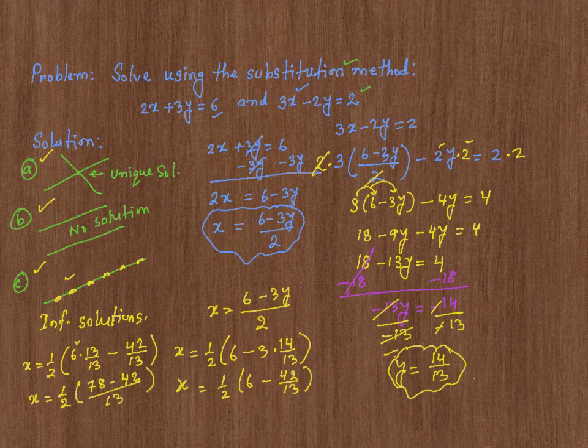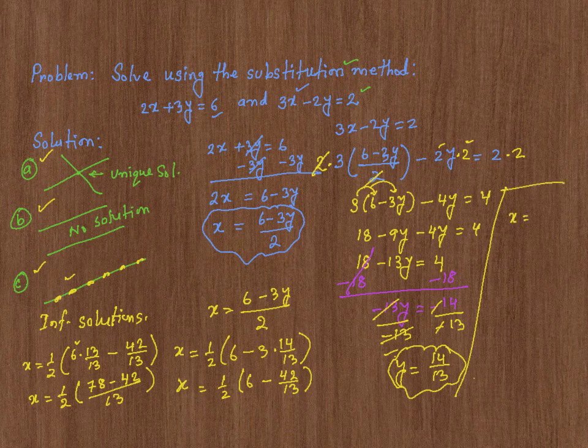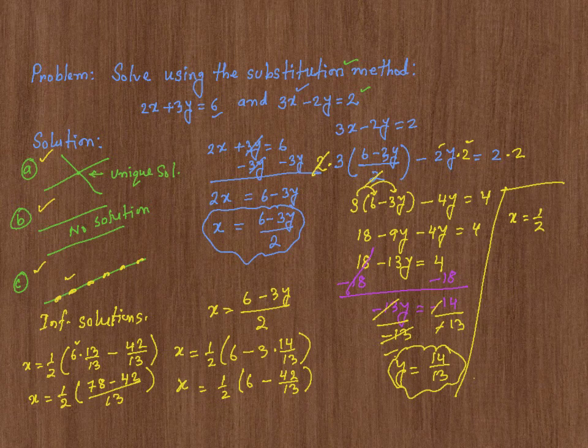To finish it up, x equals 1 half times, 78 minus 42 is 36, times 36 over 13. 2 goes into 36, 18 times, so my x is going to be 18 over 13.